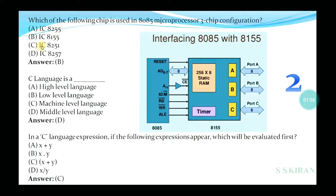Which of the following chip is used in 8085 microprocessor 3-chip configuration? Observe this interfacing of 8085 with 8155: 8255, 8155, 8251, 8257. Option is B, IC 8155. Observe this diagram also. C language is a high level, low level, machine level, or middle level language? Yes, option is D, middle level language.